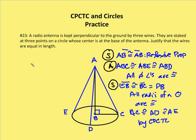So corresponding parts of congruent triangles. I have triangle ABC now by SAS, which is congruent to triangle ABE, which is congruent to triangle ABD by SAS. So because I have three congruent triangles, their corresponding parts are going to be congruent as well.